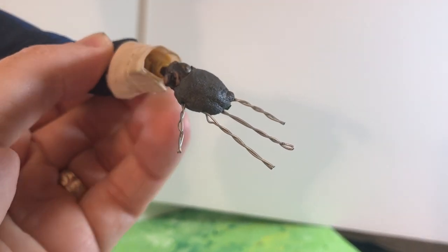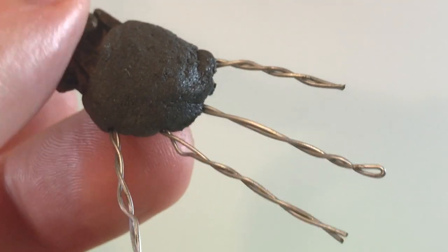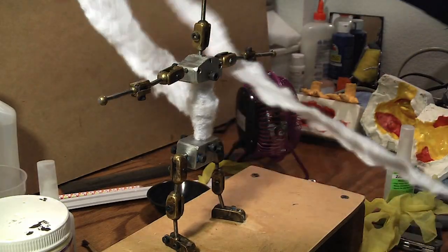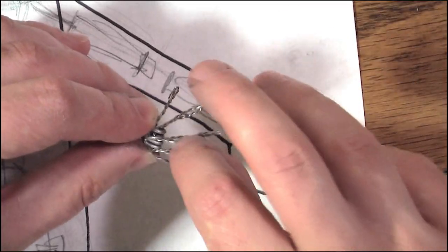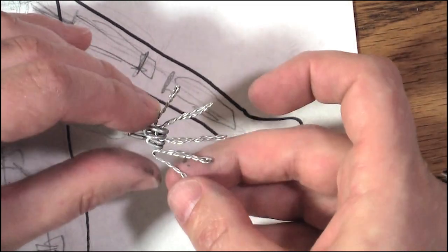Make the fingers out of thin aluminum armature wire. I secured them to the palm with epoxy putty, but that's because I'm using a ball-and-socket armature. If you're just using wire, you may be able to just twist them together.